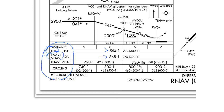On many approaches, the LNAV/VNAV minimum will be much higher than the LPV minimum. Next, you have LNAV, which simply gives you lateral guidance. LNAV approaches are strictly non-precision approaches, and you can see that it has a much higher ceiling now of 720 feet. There's also a category breakdown for categories C and D, which increases the visibility requirement to a mile and a quarter. When flying an RNAV approach, it's extremely important to note what kind of guidance your receiver is giving you. If it's not going to give you LPV guidance, you can't use the LPV minimums. If it's going to give you LNAV only guidance, you must use the LNAV minimums and cannot substitute any lower minimums on the chart.